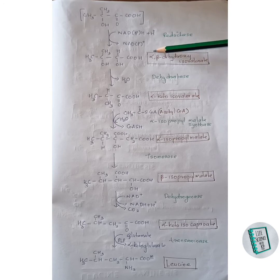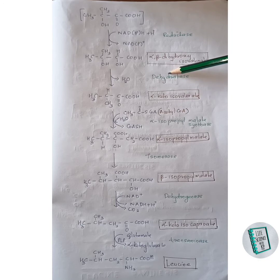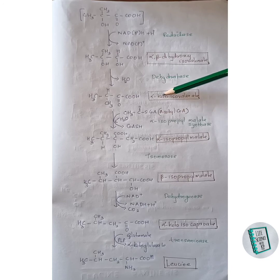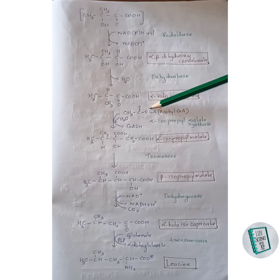The intermediate forms alpha-beta-dihydroxyisovalerate. This compound undergoes dehydration — removal of a water molecule — in the presence of dehydratase enzyme to form alpha-ketoisovalerate.